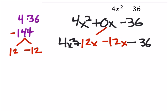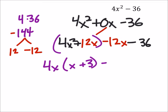Factoring by grouping, looks like we can factor out a 4x here, which gives us x plus 3, and then minus 12 from these two, that would be x plus 3 as well.